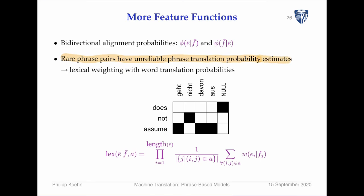Why? If a phrase only occurs once, then its translation also occurs only once. So you get a one-to-one mapping, and maximum likelihood estimation gives 100% probability. For any rare phrase, we are super certain about its translation — which is not what we want. Anything that occurs once is a bit dubious.